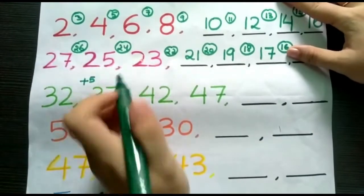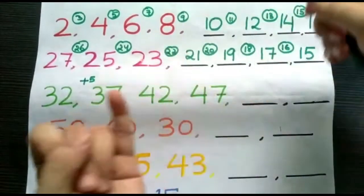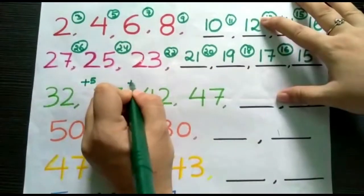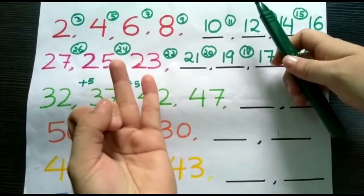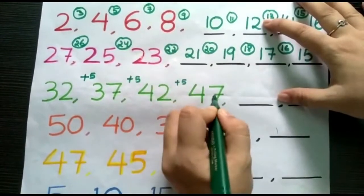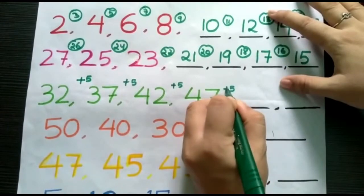Next, we have 37, 38, 39, 40, 41, 42. It is increasing by 5 numbers. 42, 43, 44, 45, 46, 47. Increasing by 5 numbers everywhere. We will add plus 5 everywhere.